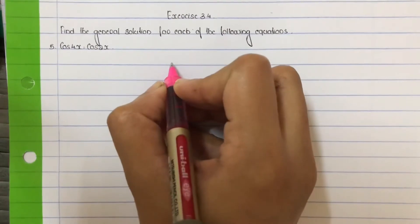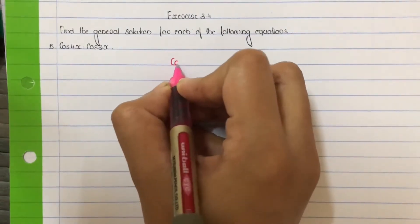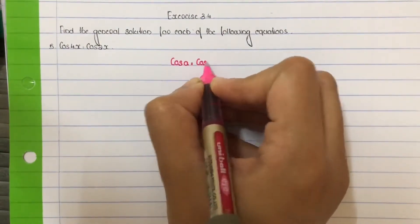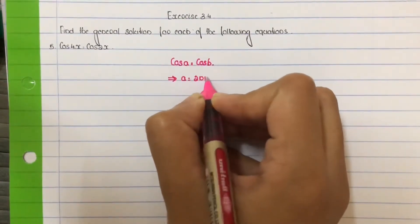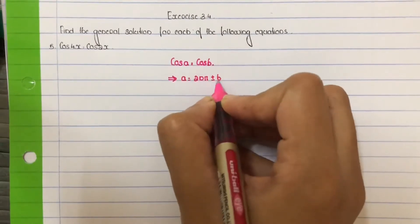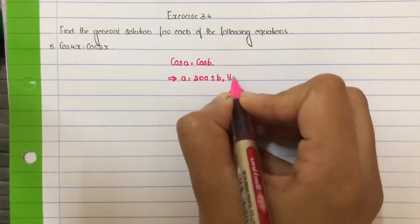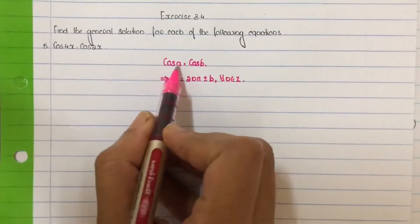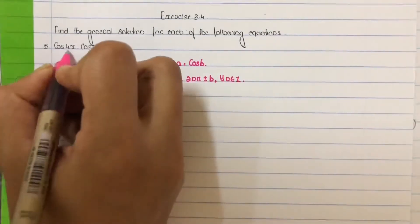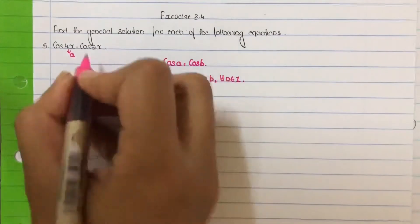We know that cos a is equal to cos b implies a equal to 2nπ plus or minus b for all n belongs to integers. Now compare: in the place of a we have 4x, in the place of b we have 2x.